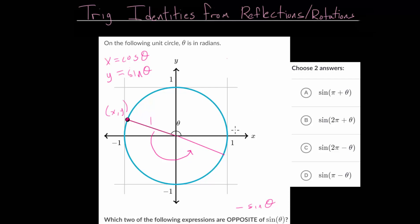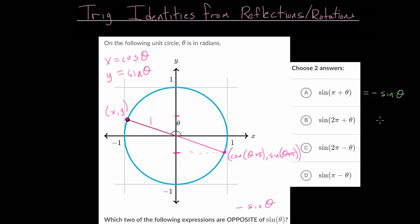At this point, the angle is theta plus pi, so we know the x value is the cosine of theta plus pi, and the y value is the sine of theta plus pi. The y value here is the exact opposite of the y value up at theta, meaning that the sine of pi plus theta equals the opposite of the sine of theta — they have opposite y values.